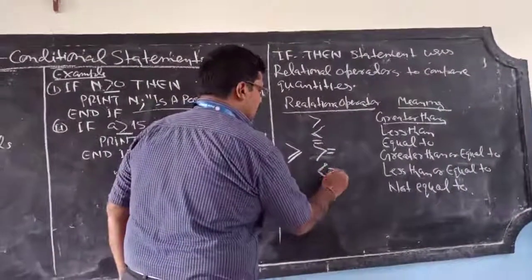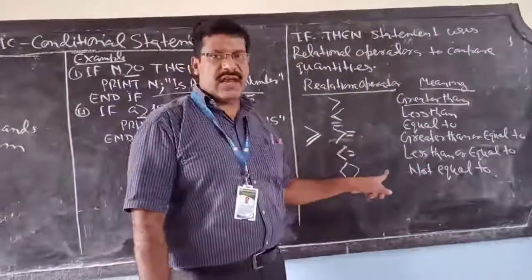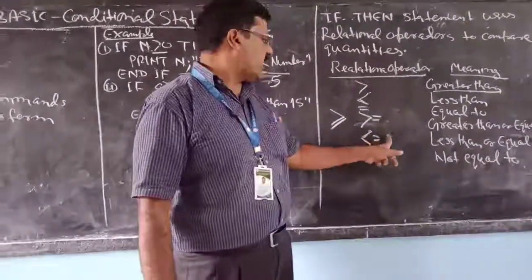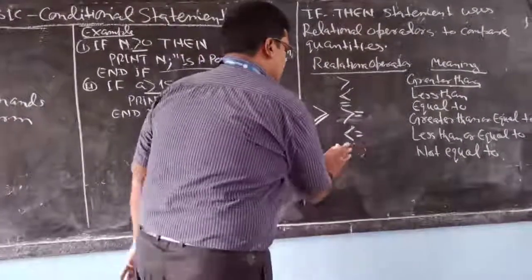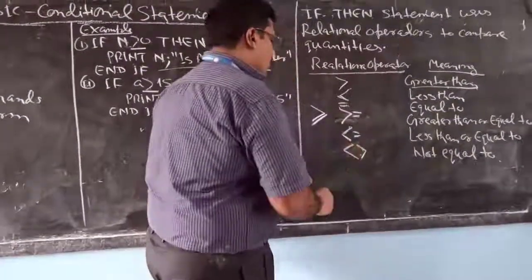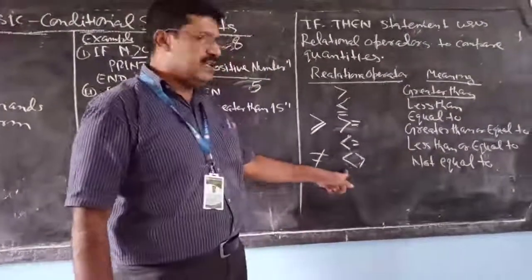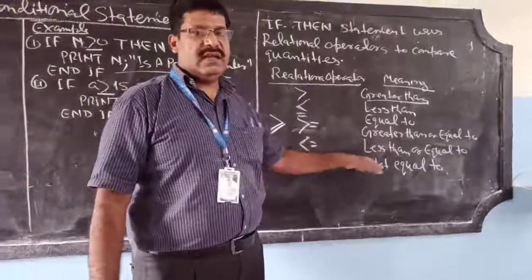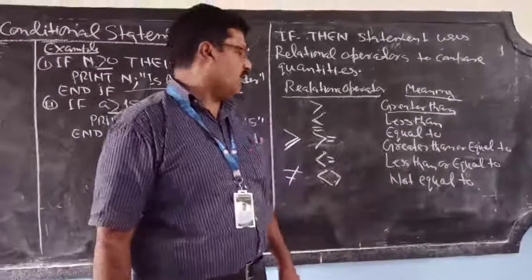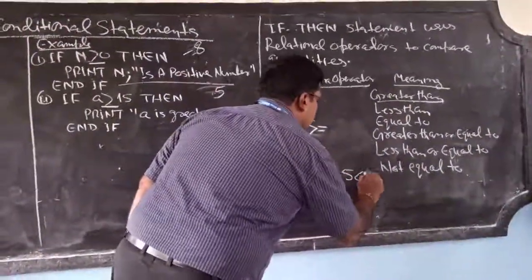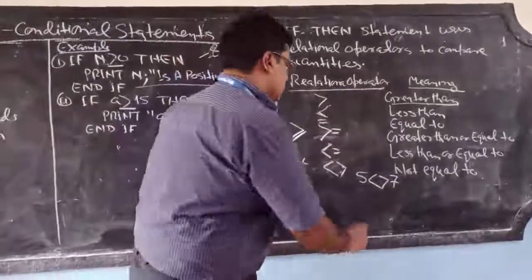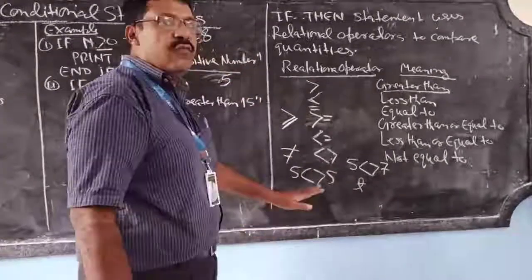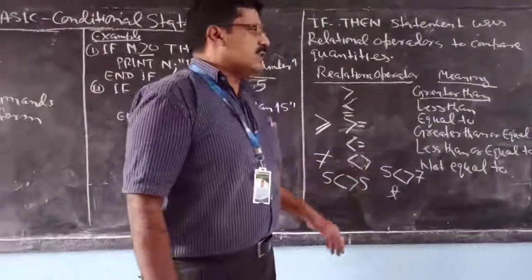The less-than-or-equal-to sign ( <= ) checks whether the first quantity is either less than or equal to the second. The not-equal-to sign ( <> ), which is the less-than and greater-than signs together, checks whether the first quantity is not equal to the second. For example, 5 <> 7 — condition is true. But 5 <> 5 — condition is false.